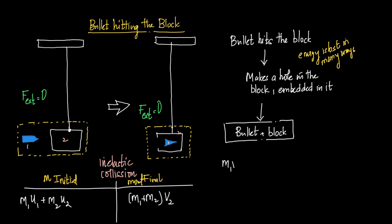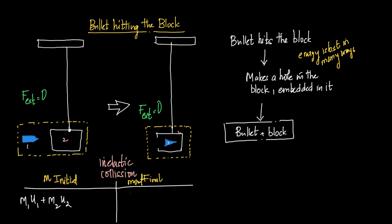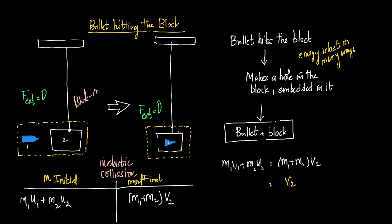Equating the momentum equation: M1·U1 + M2·U2 = (M1 + M2)·V2. Since the block is initially at rest, U2 = 0, so that term vanishes. Therefore V2 = (M1 / (M1 + M2)) × U1. This completes case 1.1 — bullet hitting the block.